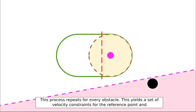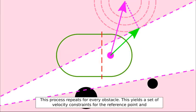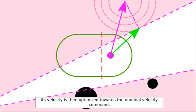This process repeats for every obstacle. This yields a set of velocity constraints for the reference point, and its velocity is then optimized towards the nominal velocity command.